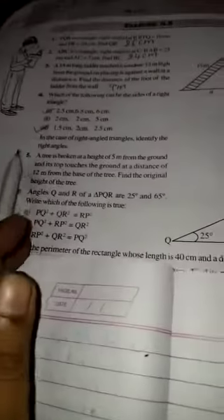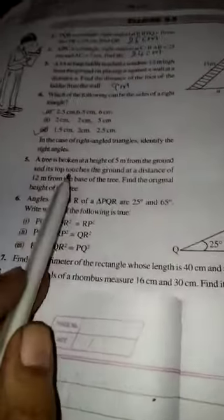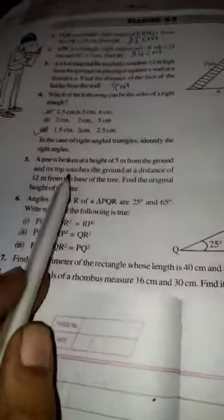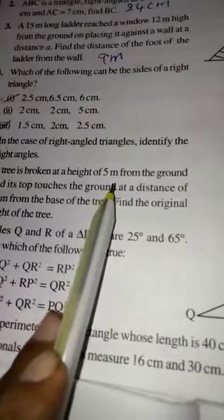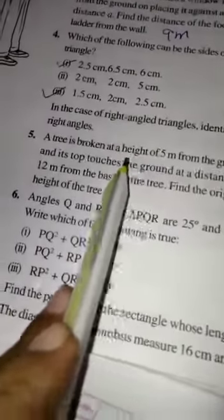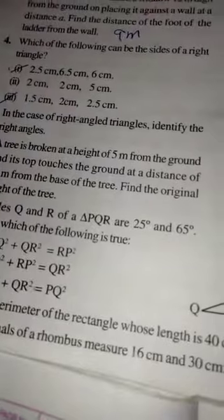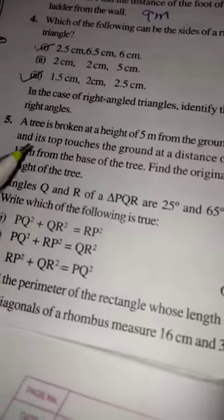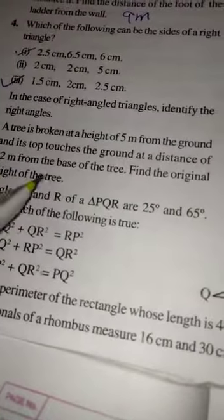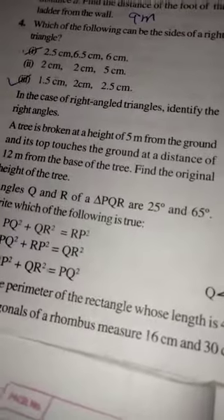Now, come on to question number 5. It is a really very good question and important also. A tree is broken at a height of 5 meter from the ground and its top touches the ground at a distance of 12 meter from the base of the tree. Find the original height of the tree.